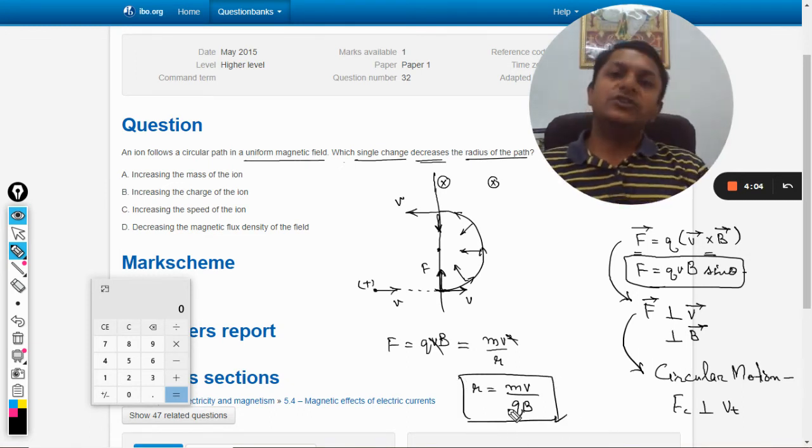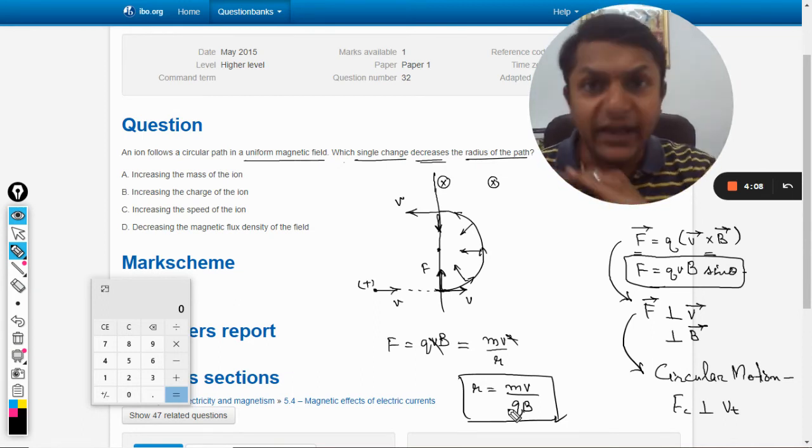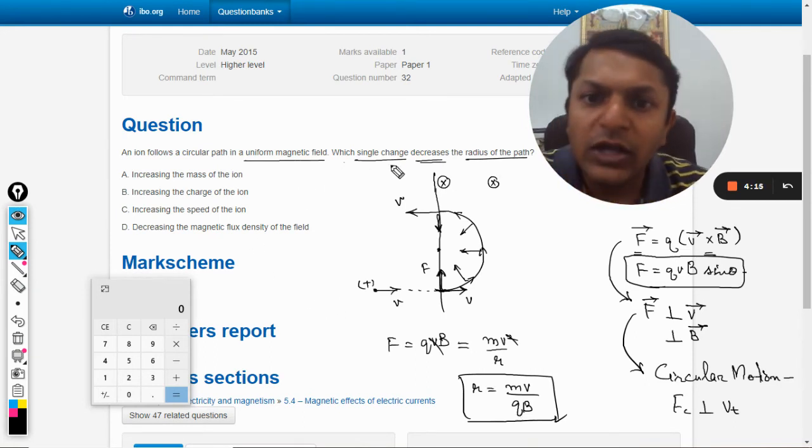So this is the formula for the radius: mv by qB. I could have given you this formula directly without this background knowledge, but I'm giving you this just to clarify the concept.